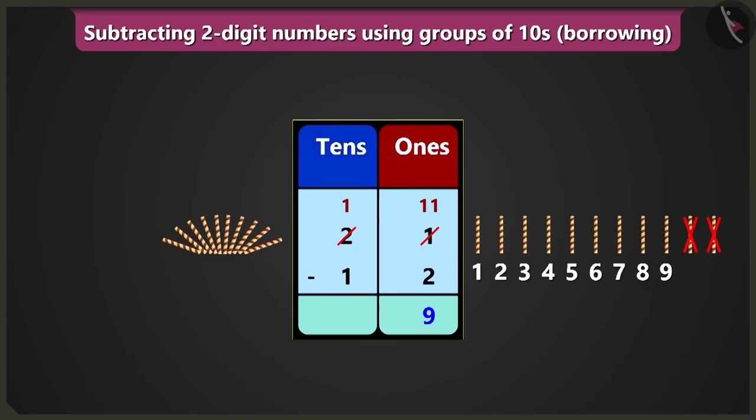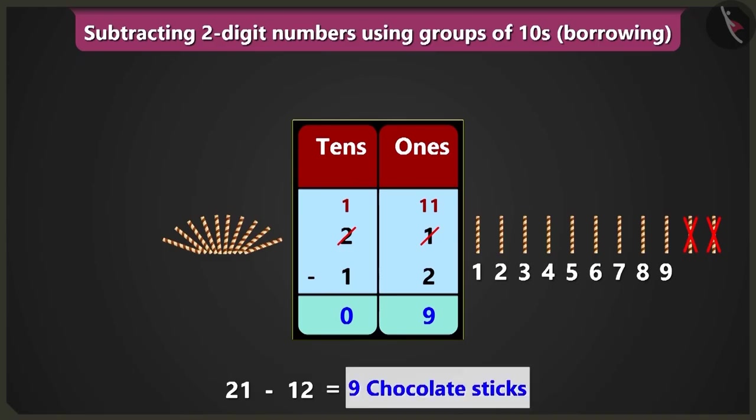Now look, if we will subtract one ten from one ten in the box of tens, then we will get zero. Yes, twenty-one minus twelve is equal to nine, so Bunty would have nine chocolates in his share.